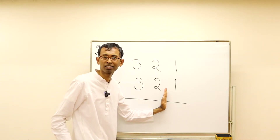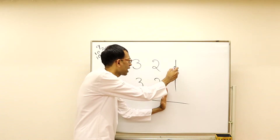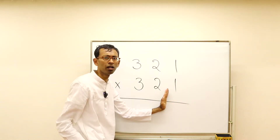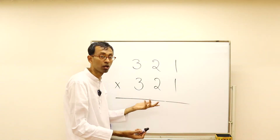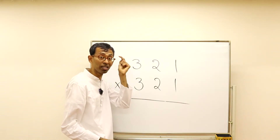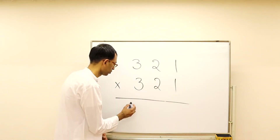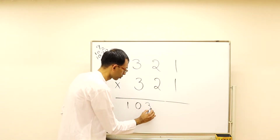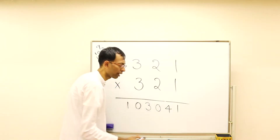Then we move our center forward: two plus two is four, and then there is a one. So one-zero-three-zero followed by four and one. The answer is one-zero-three-zero-four-one. As simple as this!